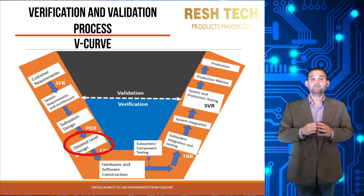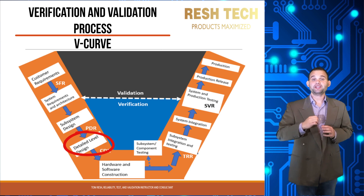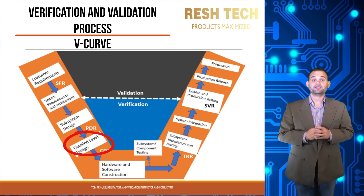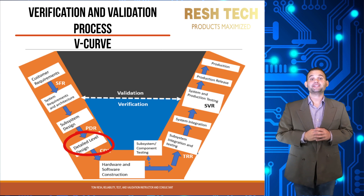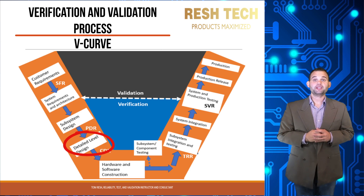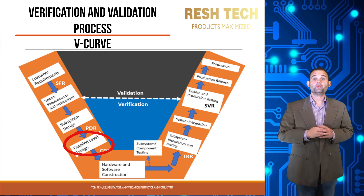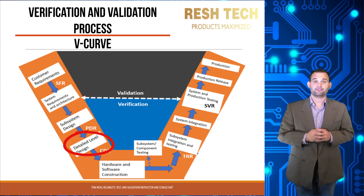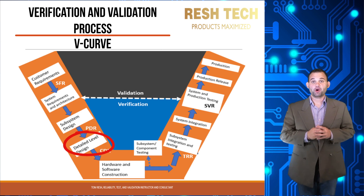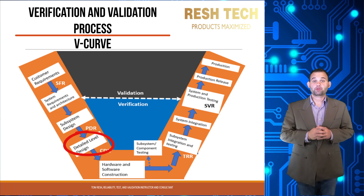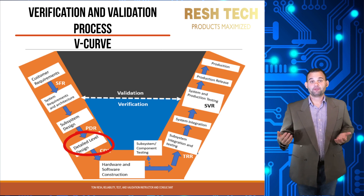The next step is the detailed level design, where components are selected to meet subsystem functional targets. Reliability engineering should assess component reliability data supplied by the manufacturer or supplier. If no data exists — for example, for a new technology — the reliability engineering team will need to conduct their own reliability testing as part of the development process. This can be tricky and time-consuming, and typically the component will be integrated into the design before testing is completed, making it a technical and program risk decision.